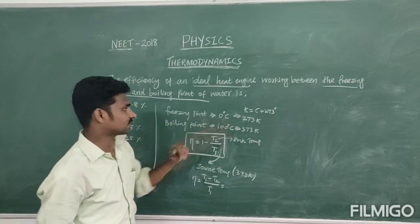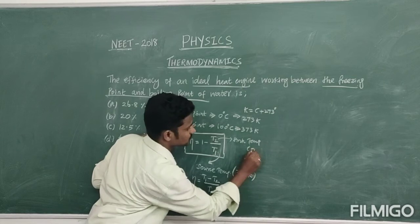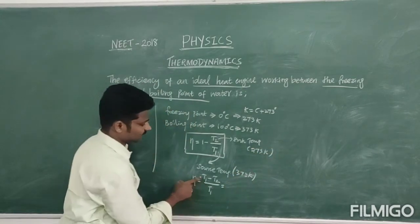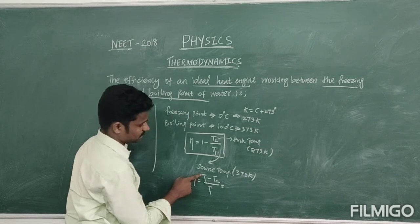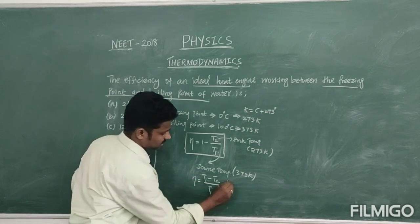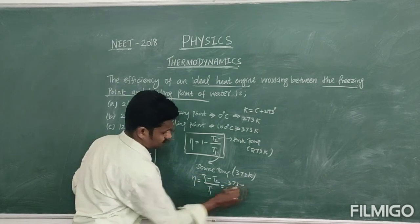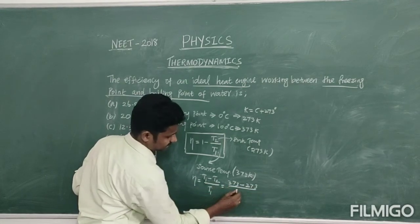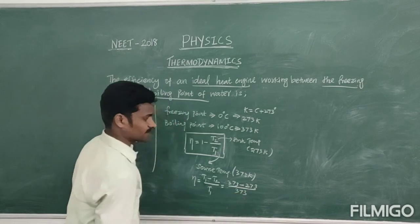Then, sink is T2, I taken as the freezing point, that is 273 Kelvin. So, we can substitute this value for T1, that is 373 minus T2 value, 273 divided by T1 value, 373.